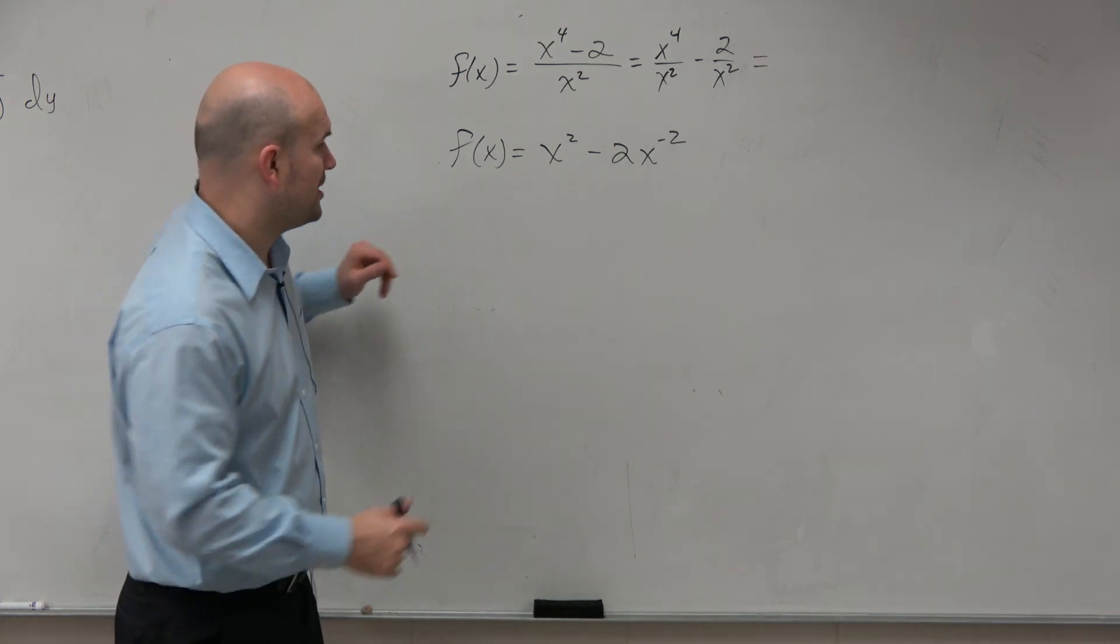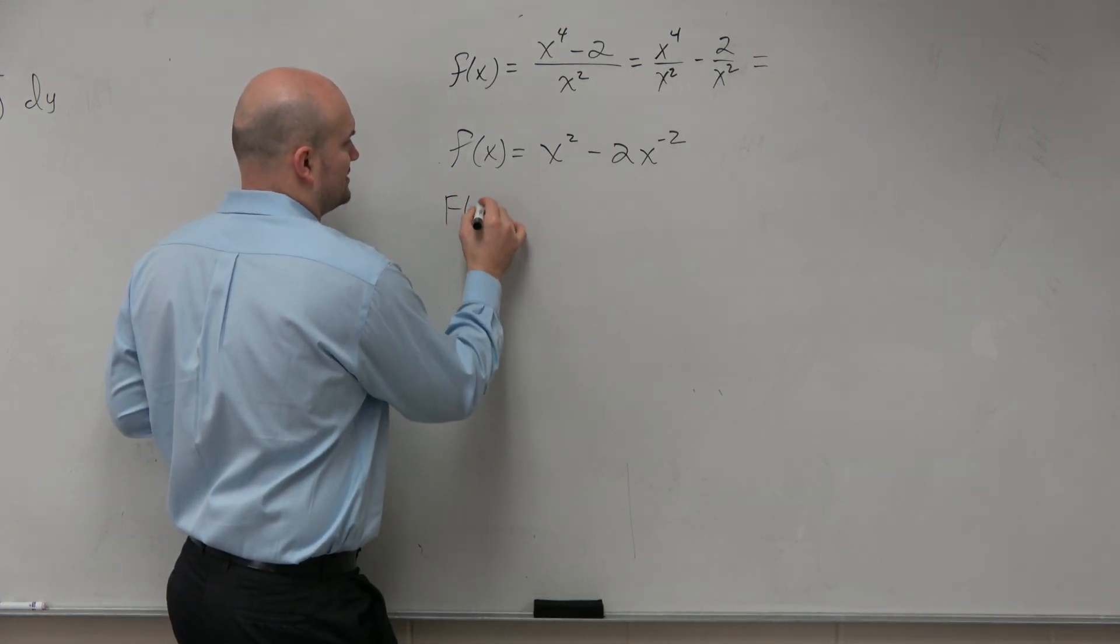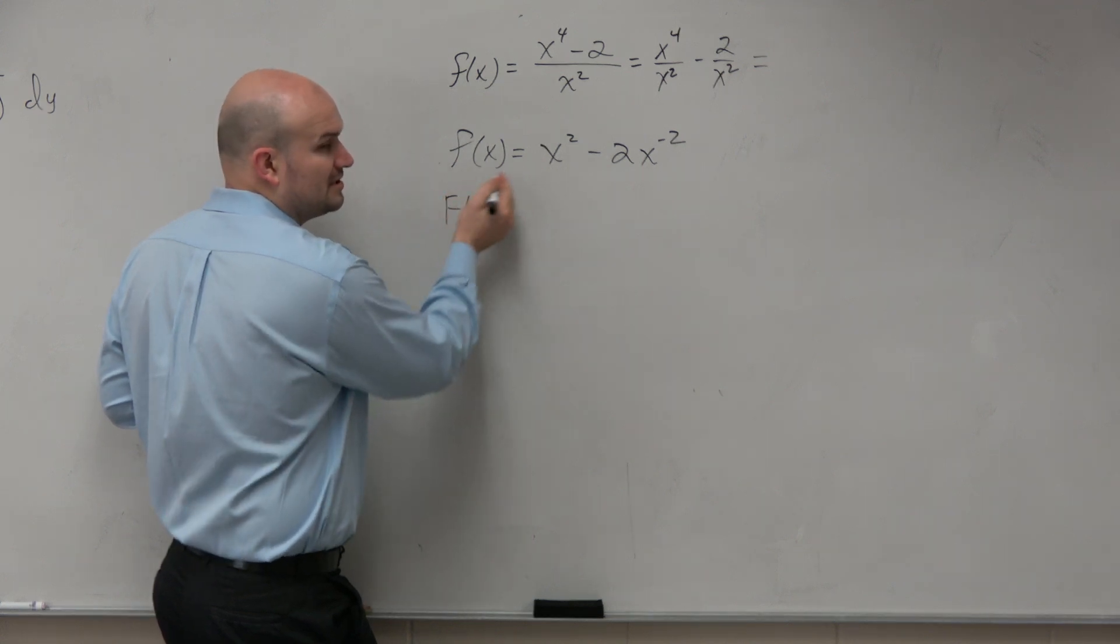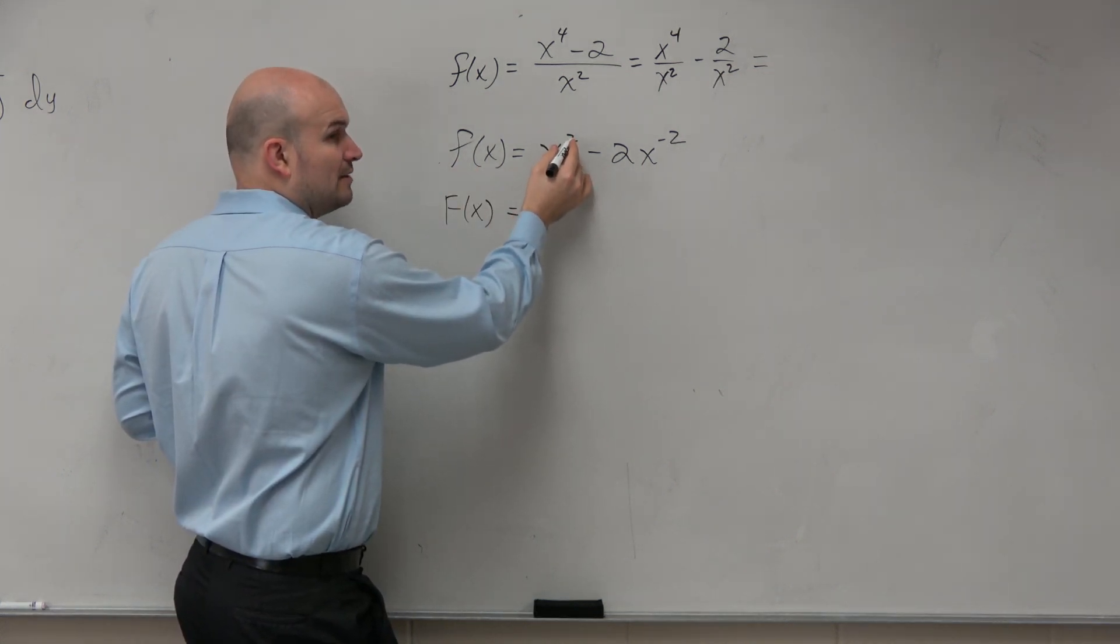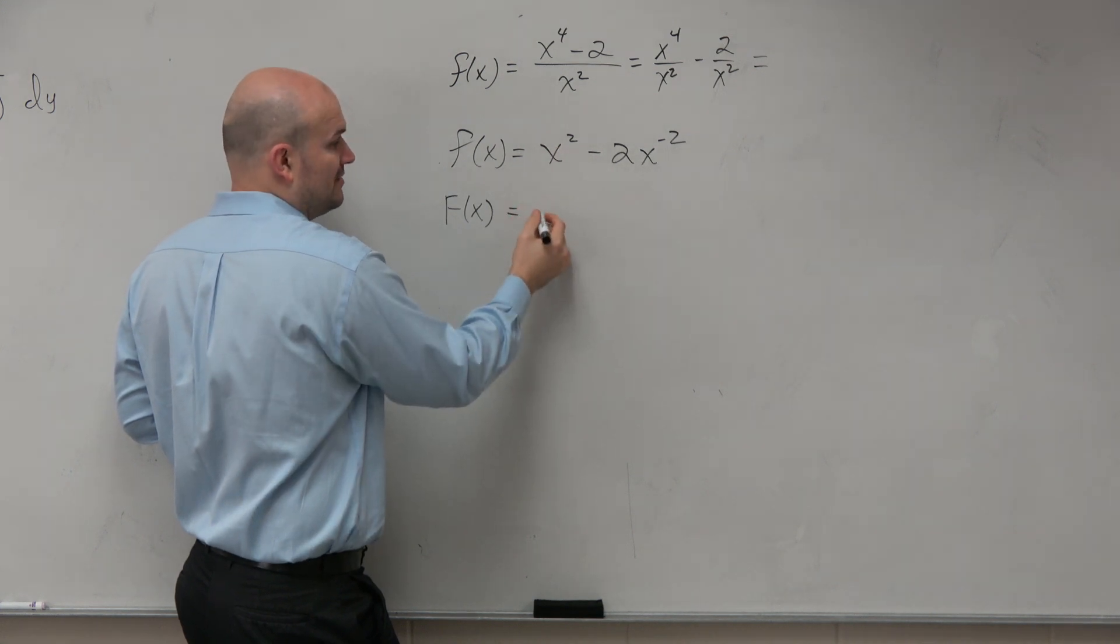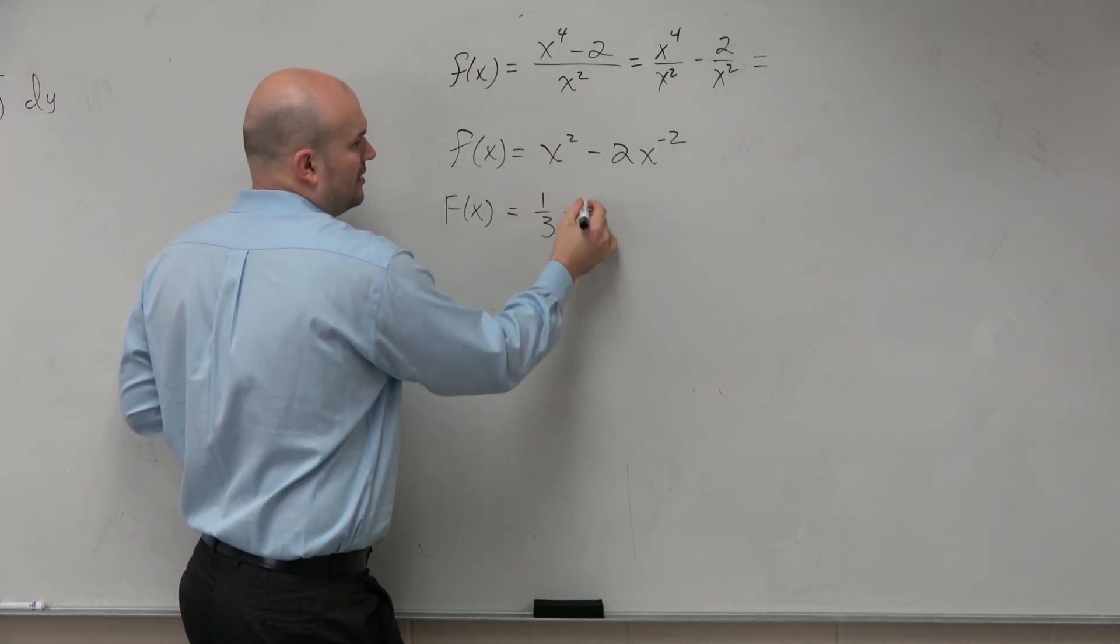All right. Now, just apply my power rule here for my anti-differentiation. I'll use capital F because this was the lowercase f. So therefore, this is going to be add 1, which is 3, and then divide by 3. So it would be 1 third x cubed.